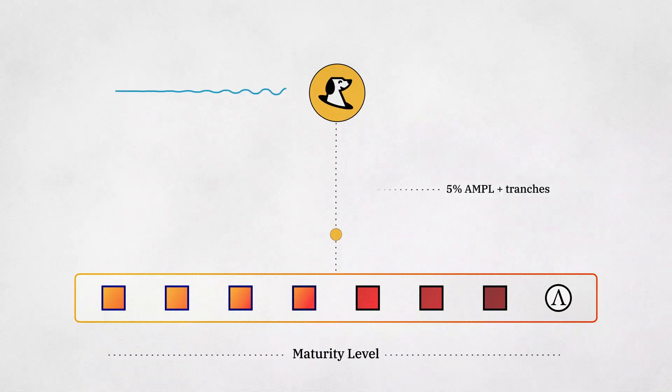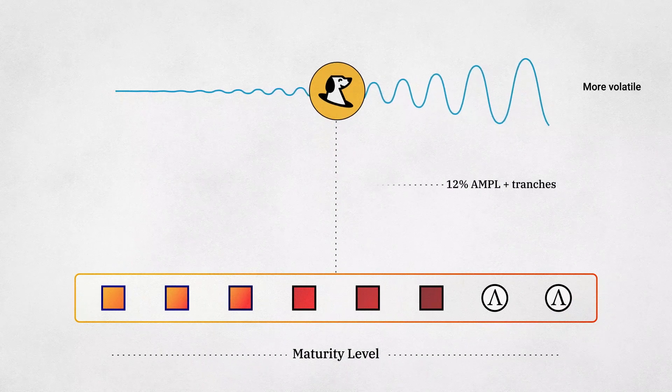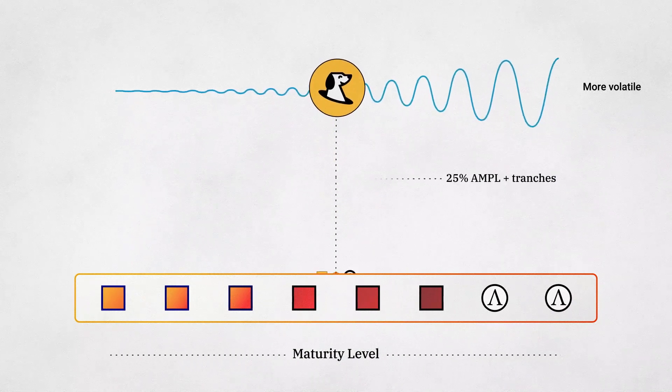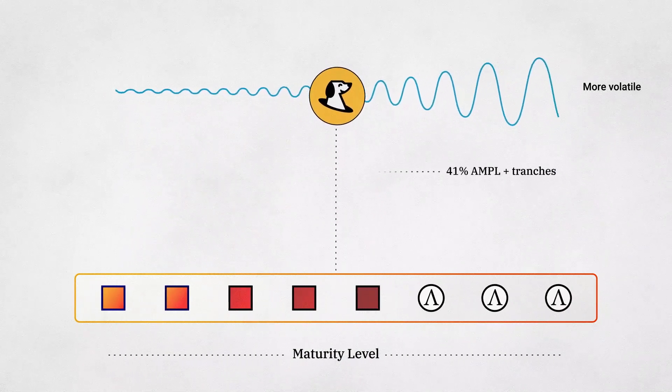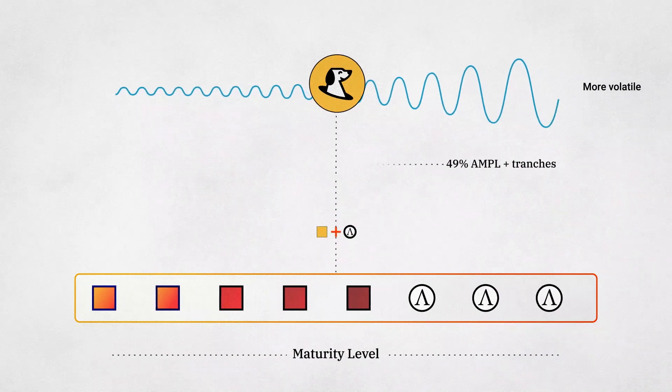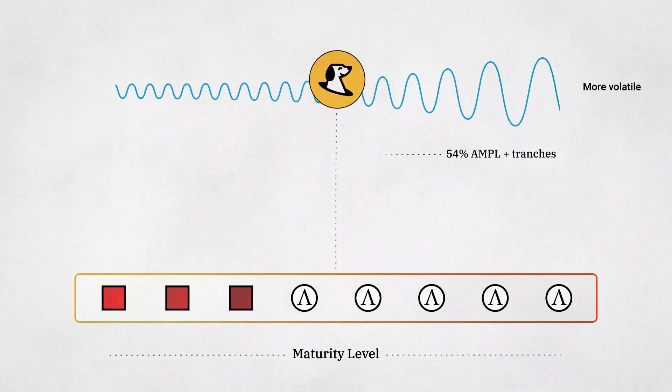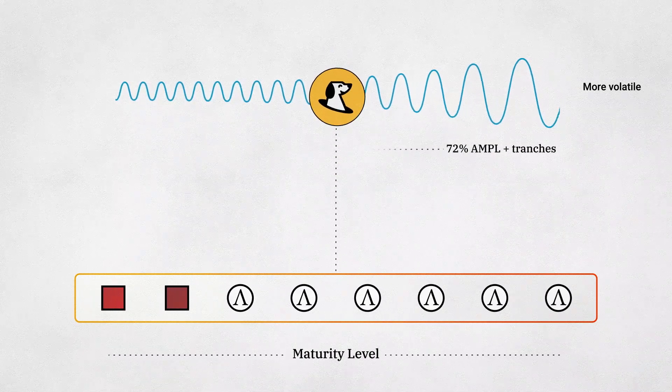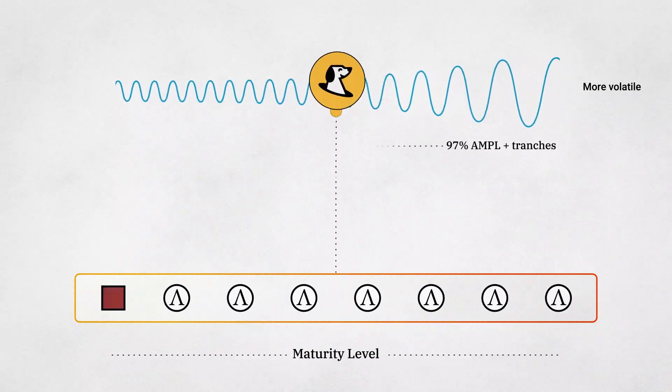The more the collateral set matures, the more volatile SPOT becomes. But unlike discrete systems, this process does not cause the system to catastrophically break. Instead, the SPOT token just becomes temporarily more volatile as it progressively degrades into its base asset.